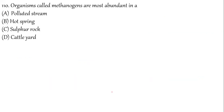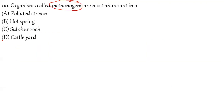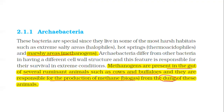Question 110: Organisms called methanogens are most abundant where? Methanogens are found in marshy areas and present in the gut of several ruminant animals such as cows and buffaloes. They are responsible for the production of methane from animal dung. The answer is option D — cattle yard, as that is where the cattle are.